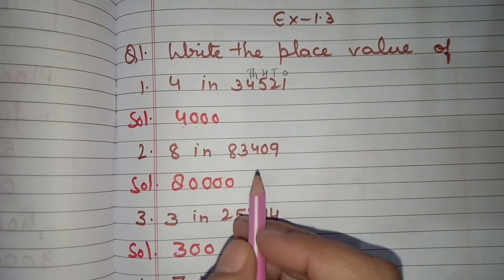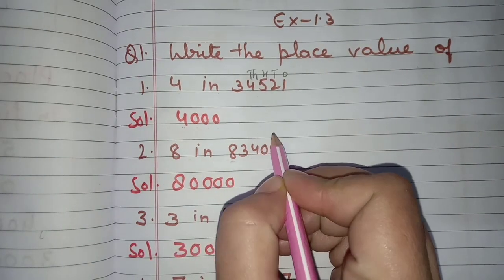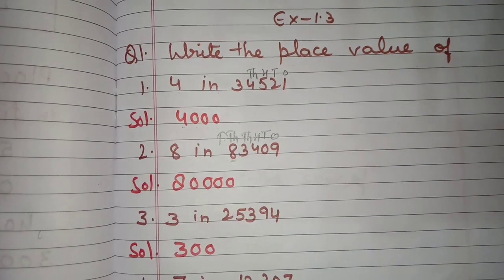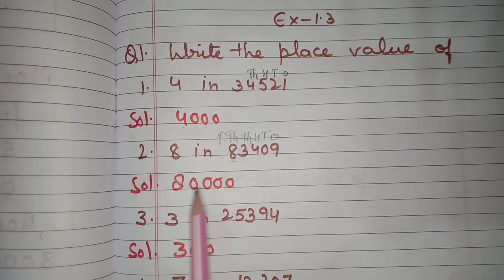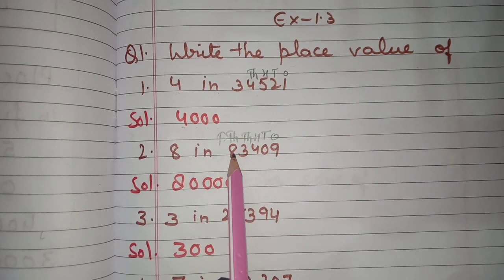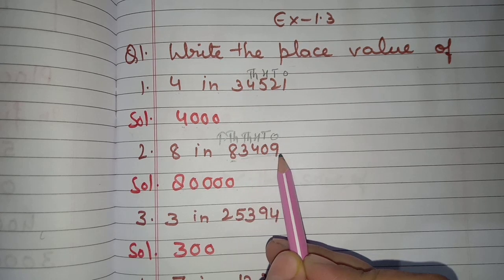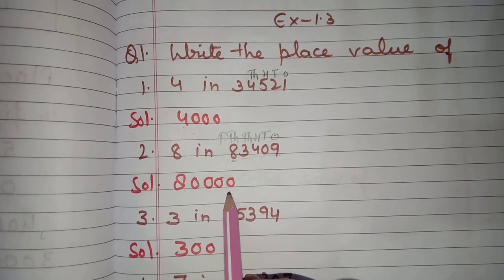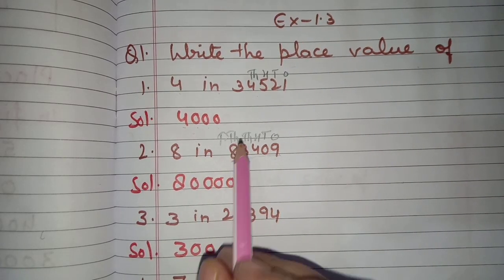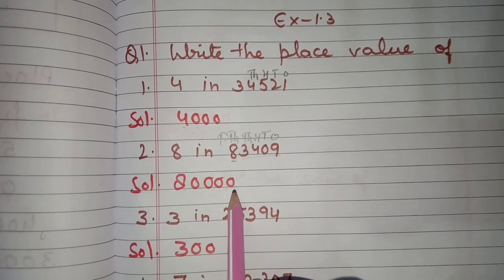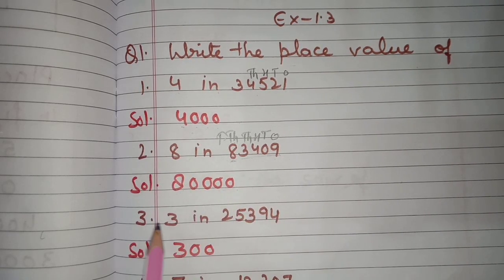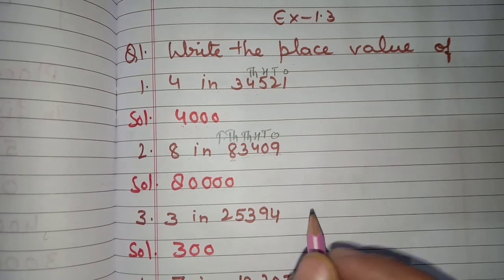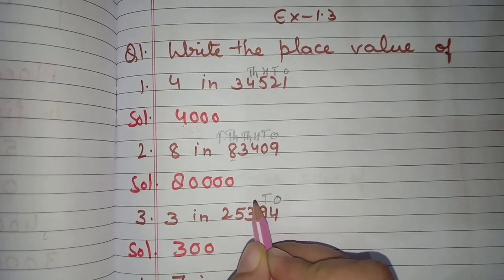In 83,409, what is the place value of 8? Ones, tens, hundreds, thousands, ten thousands — so 8 is at ten thousands place, meaning eighty thousand. You can also count the digits after 8: there are 4 digits, so you put four zeros. So 8 ten thousands means 80,000. Next is 3 in 25,394 — ones, tens, hundreds — the place value of 3 is hundreds.